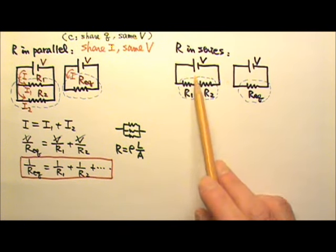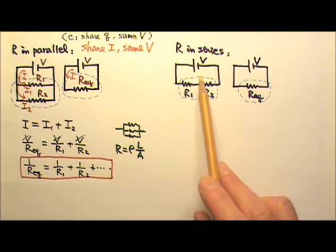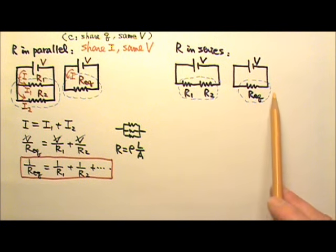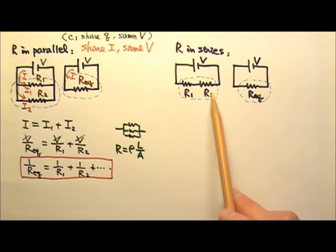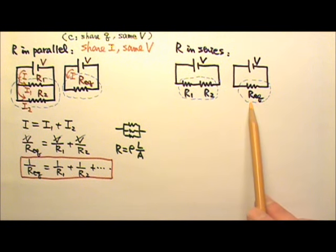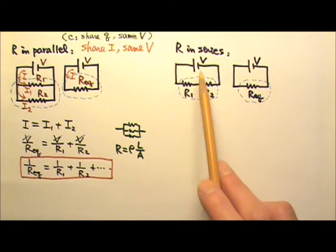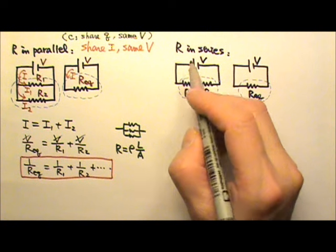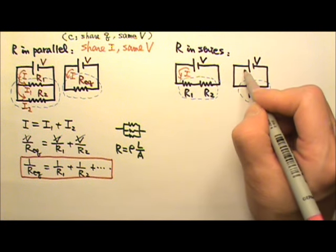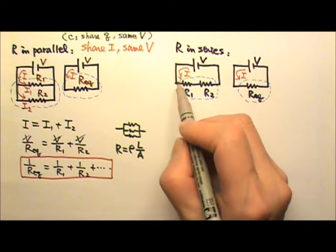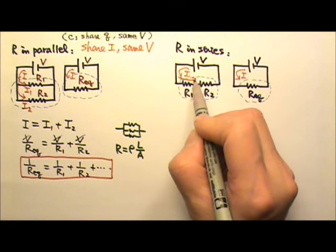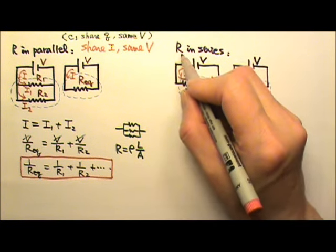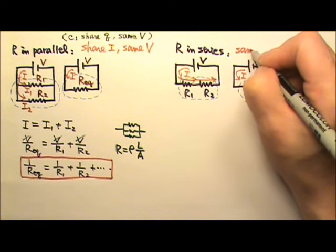Here I have two resistors R1 and R2 in series, and the combination is connected to a battery with a voltage V. That one is the equivalent circuit. If I put these two in series in a black box and the single equivalent resistor in another black box, everything outside the black box should look exactly the same. So if this battery pumps the current I, that battery should do exactly the same. This current would flow through R1 and keep flowing through R2, so if the two resistors are in series, they would have the same current.